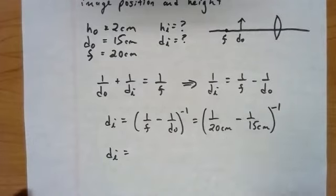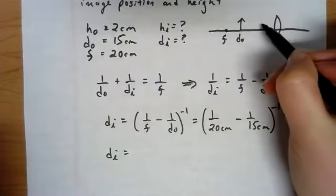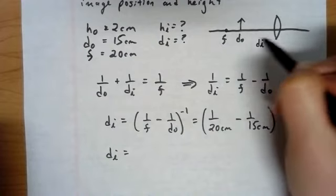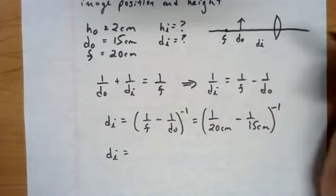And then we're going to do one over 20 centimeters minus one over 15 centimeters. And yes, you can use centimeters in this, because as long as you're consistent, then everything you find will also be consistent. So before I plug this in the calculator, take a moment. Is this going to be a positive number or a negative number?